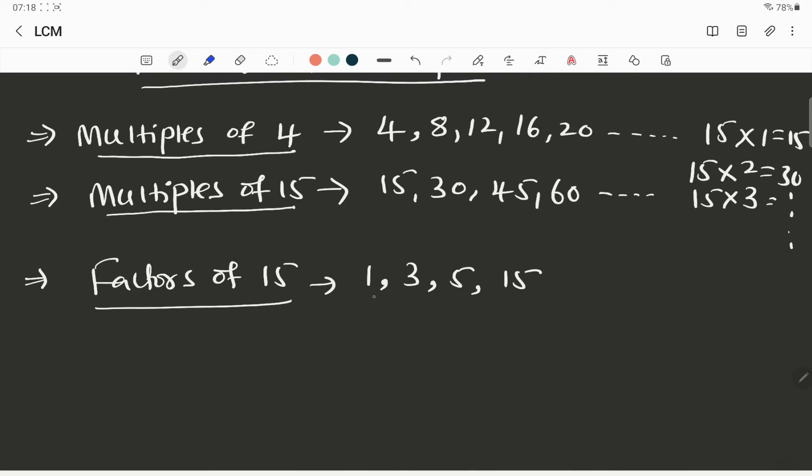Factors means these are the numbers which are going to divide the given number completely. Look at this 15. 15 is completely divisible by 1, completely divisible by 3. You can check 15 by 1 is 15. 15 by 3, if you are doing 3 ones are 3, 5s are, you will get.